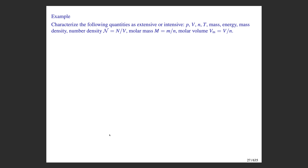To classify a property, I recommend a thought experiment: consider two identical systems — identical in every way — then think about the quantity of interest, and imagine combining those two subsystems into one total system. Ask yourself: does the quantity double? If it doubles when you double the system, it's extensive; if it stays the same, it's intensive.